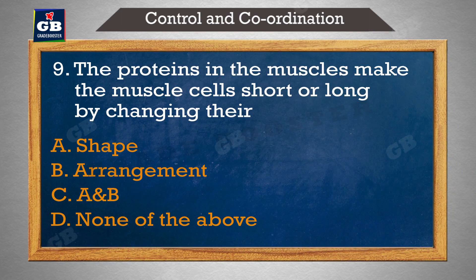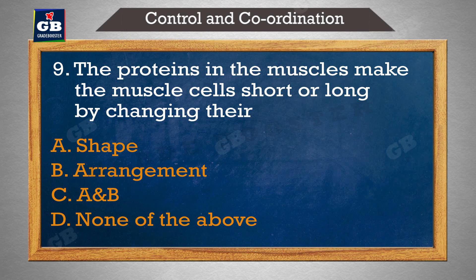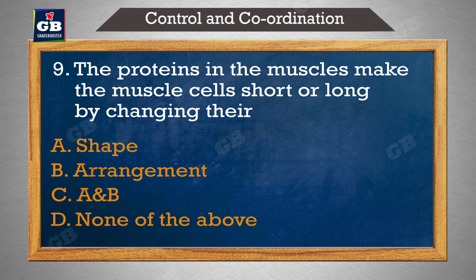The proteins in the muscles make the muscle cells short or long by changing their — muscles mein proteins unke dash badal kar muscle cells ko short ya long banate hai: a) shape, b) arrangement, c) both a and b, d) none of the above.